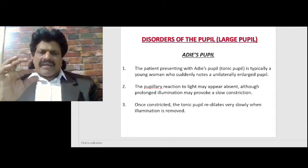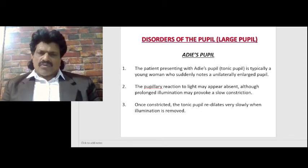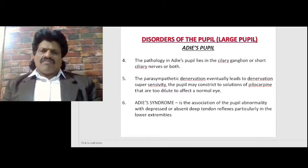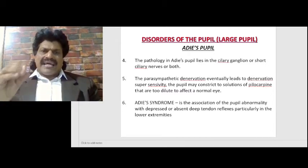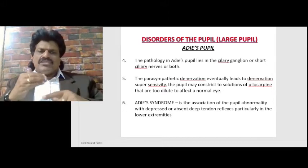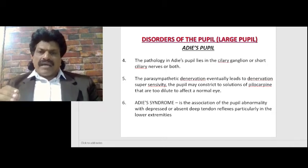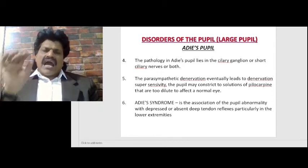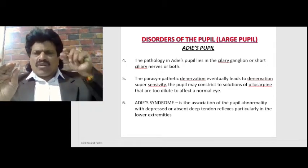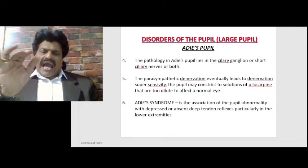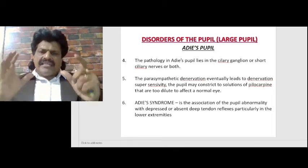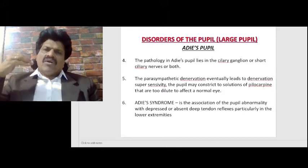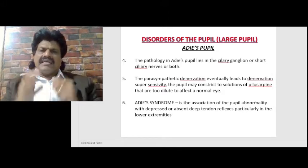Once constricted, the tonic pupil redilates very slowly when illumination is removed. The pathology in Adie's pupil lies in the ciliary ganglion or short ciliary nerves or both. Parasympathetic denervation eventually leads to denervation supersensitivity, and the pupil may constrict to small dilute solutions of pilocarpine that are too dilute to affect a normal eye. Adie's syndrome is the association of this pupil abnormality with depressed or absent deep tendon reflexes, particularly in the lower extremities.